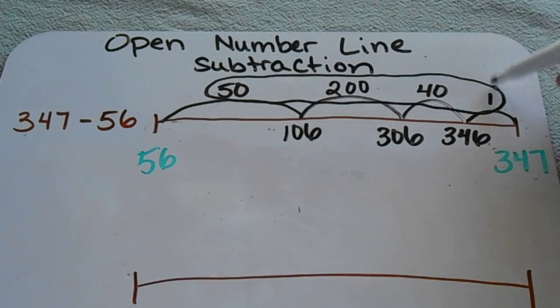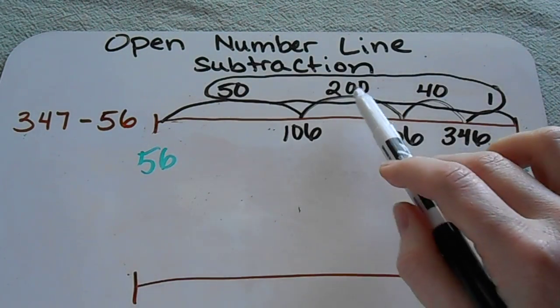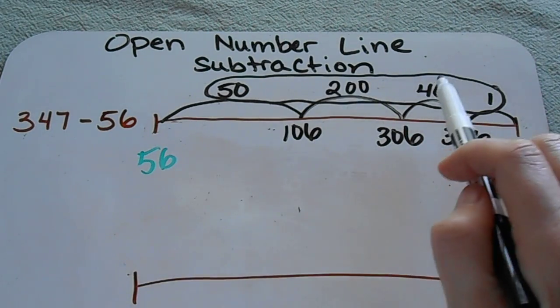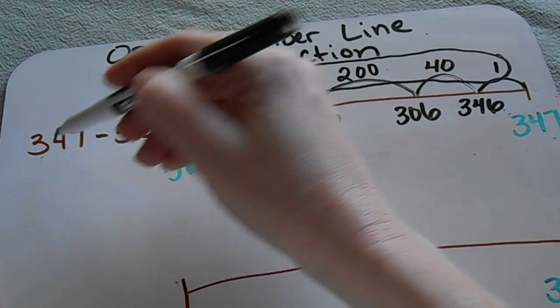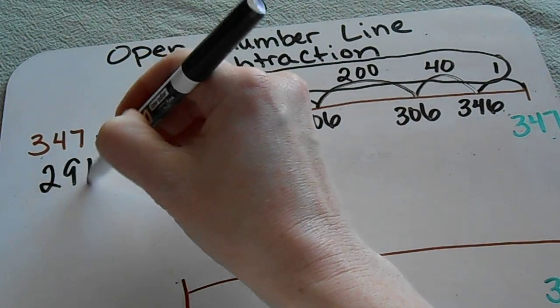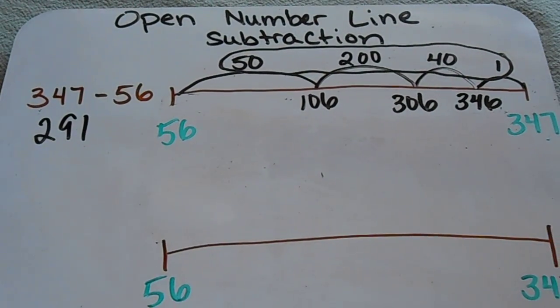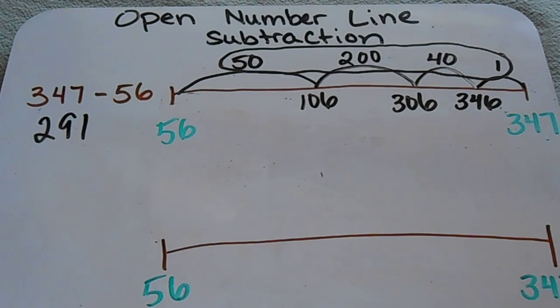So here are all of my jumps. If I add all of these up, I have 200, 50, 40, and 1. If I put all of those together, I come up with 291, which is the difference between 347 and 56.